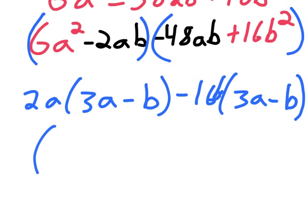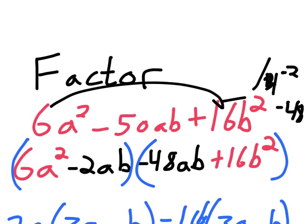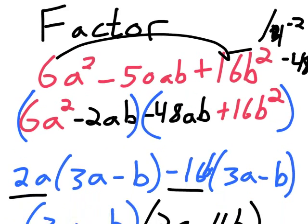Your last step is to factor out the matching parentheses and make a new parentheses with the stuff on the outside. Now, if you multiply these parentheses out, it turns into what you started with: 6a² - 50ab + 16b².